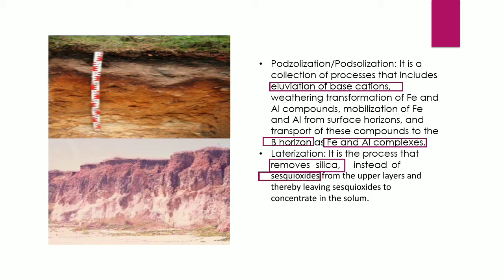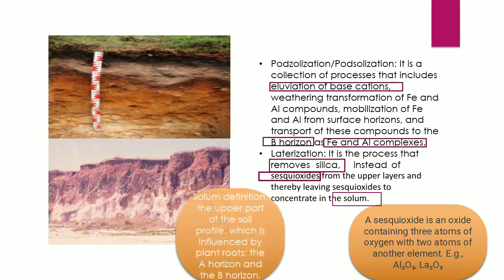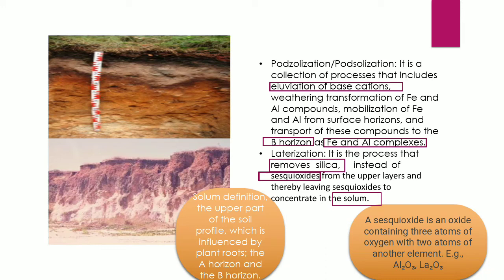A sesquioxide is an oxide containing three atoms of oxygen with two atoms of another element — for example, aluminum oxide. Laterization removes silica, thereby leaving sesquioxides to concentrate in the solum. The solum is the A horizon and B horizon — the upper part of the soil profile influenced by plant roots.